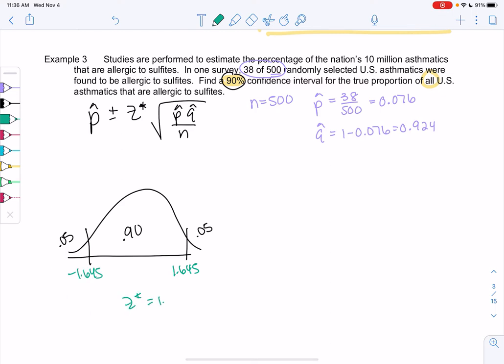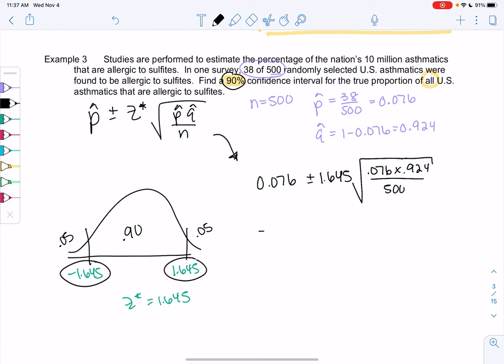We'll call that z-star in the formula. And let's plug in. So p-hat will be 0.076 plus or minus 1.645 square root, 0.076 times 0.924 over 500, all inside a square root.